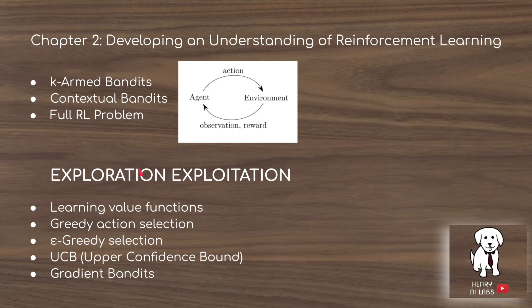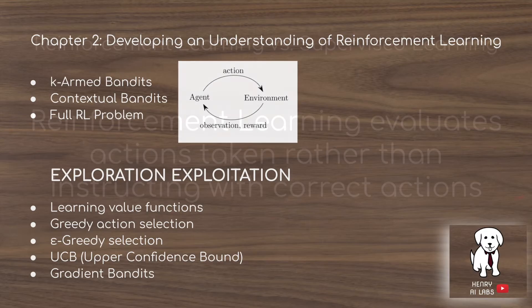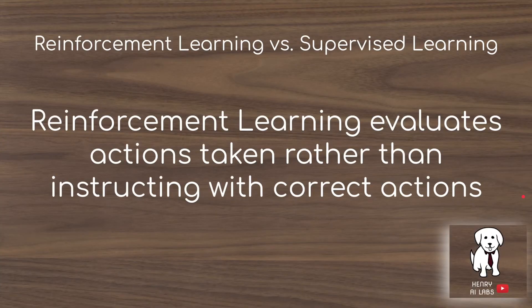A big theme in this chapter is the exploration-exploitation trade-off and how we learn value functions through greedy action selection, epsilon greedy selection, the upper confidence bound, and gradient bandits. If you're coming from other disciplines like supervised learning, it's important to frame how reinforcement learning is different — it evaluates the actions taken rather than instructing what the correct actions are with a correct set of labels.